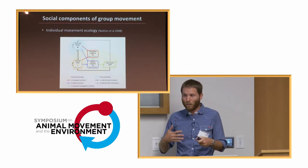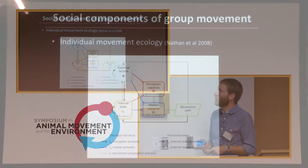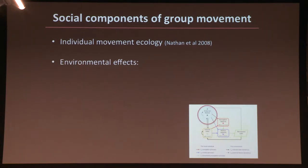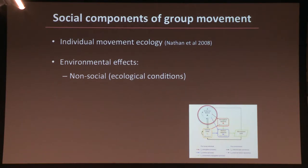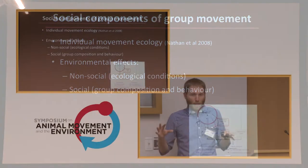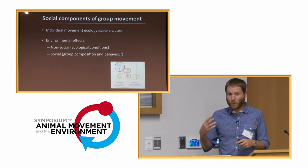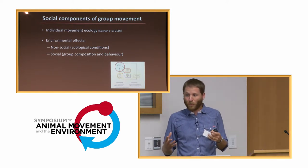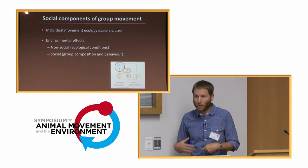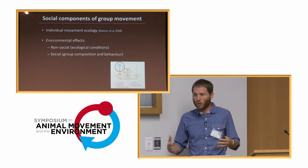Within the movement ecology framework, I couldn't find really any mention of social aspects, but we could put it inside the grey box of external factors. When we think about these external factors, there might be two kinds. The first is the non-social — what we traditionally think about — like ecological conditions such as habitat and weather. Then there's the social aspect, which can be broken down into two parts: group composition, meaning who the different members are, their phenotypes and behaviours; and the behaviour of the group — for example, if the group is moving at certain speeds, you need to move at the same speed to remain part of it.